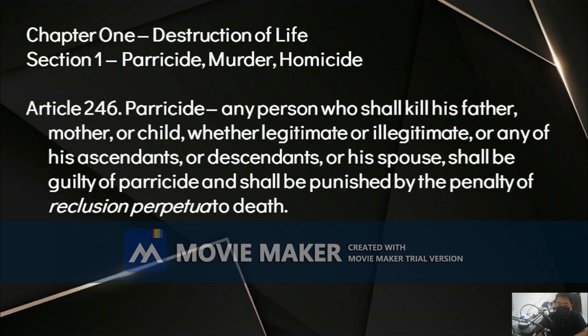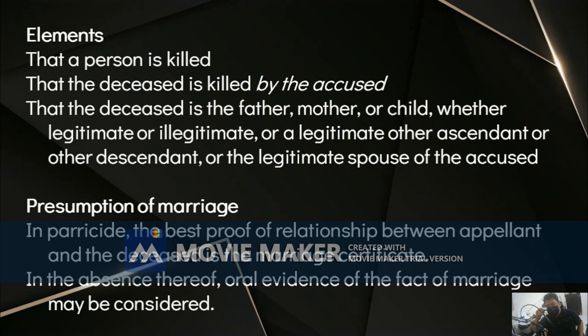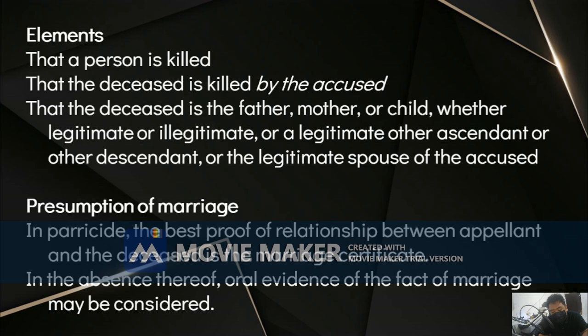In parricide, there is what we call the presumption of marriage. The best proof of relationship between the appellant and the deceased is the marriage certificate. In its absence, oral evidence of the fact of marriage may be considered — such as the testimony of the appellant that he was married to the deceased, which is an admission against his penal interest. This confirms what is called 'semper praesumitur pro matrimonio' — the presumption of marriage — that a man and woman deporting themselves as husband and wife are presumed to have entered into a lawful contract of marriage.